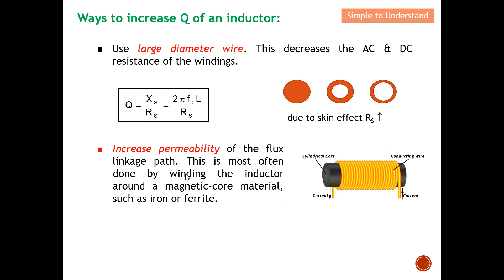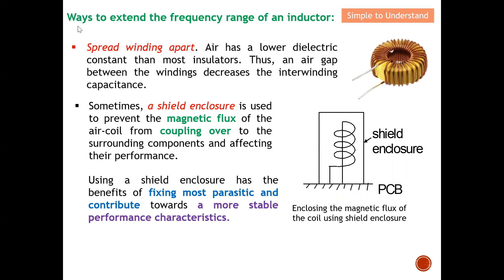Next is to increase the permeability of the flux linkage path. This is most commonly done by winding the inductor around a magnetic core material such as iron ferrite. Without any core material, the center of the coil is just air. However, by coiling the inductor around a magnetic core material, you can increase the Q of the inductor.